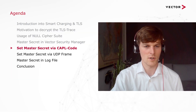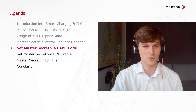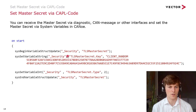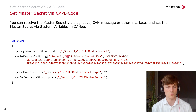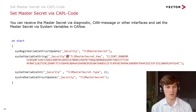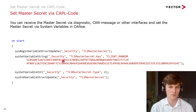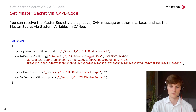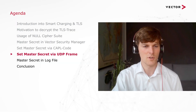Another solution is setting the master secret via CAPL code. This gives you a very generic way to set the master secret — for example, you can receive the master secret via a diagnostic or CAN message and set it dynamically in your CAPL code. You just have to assign the master secret to the system variable TLS master secret.